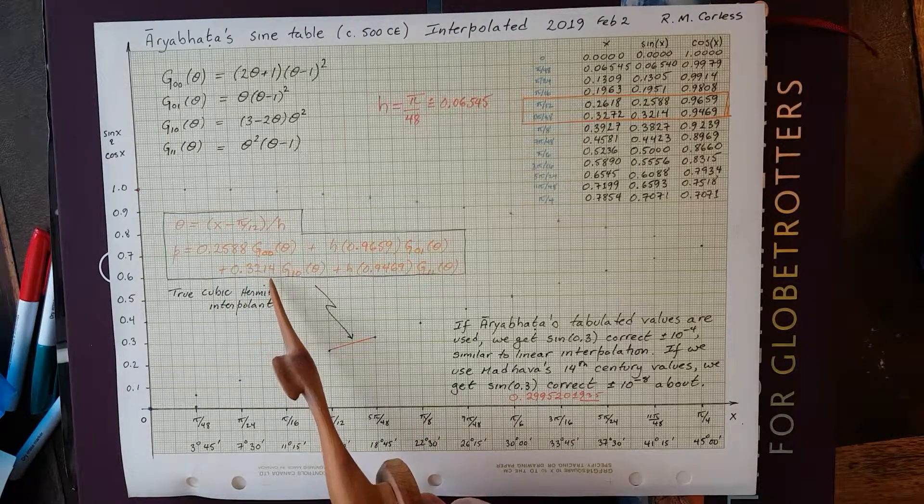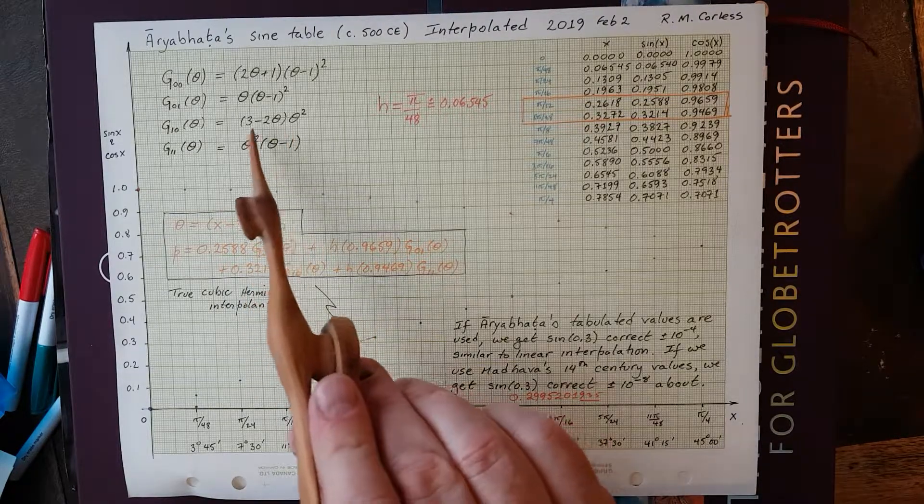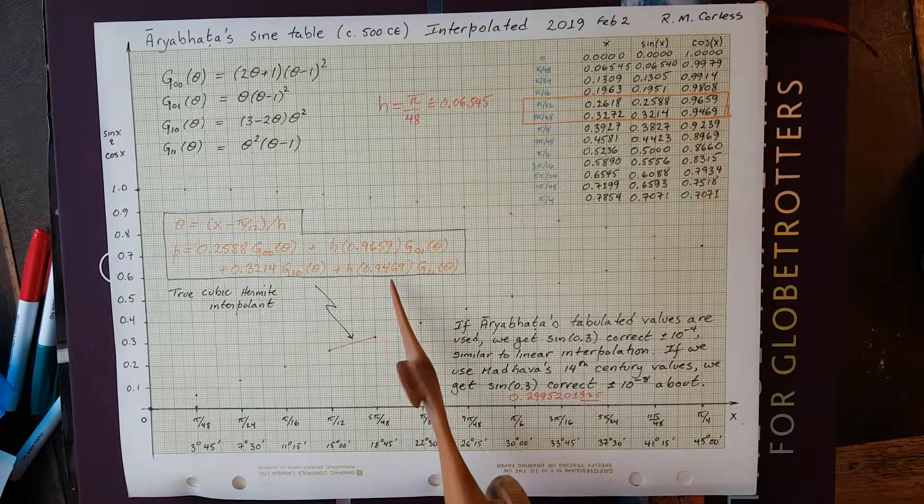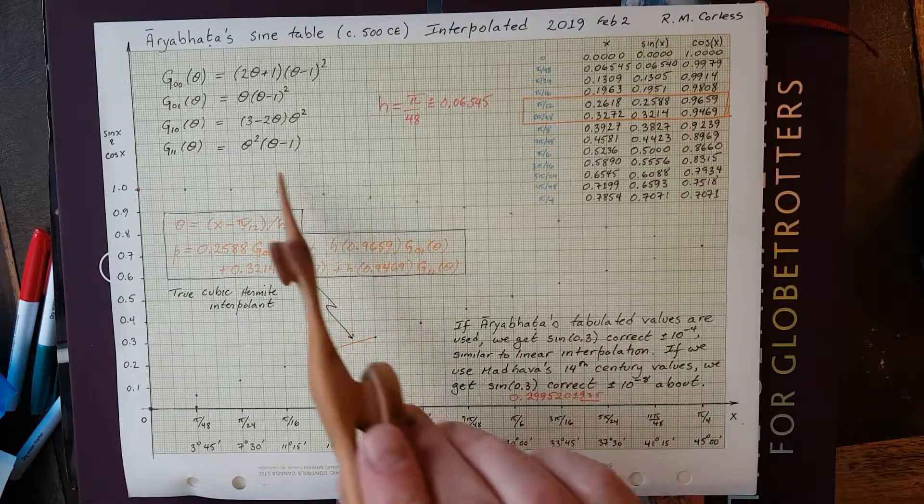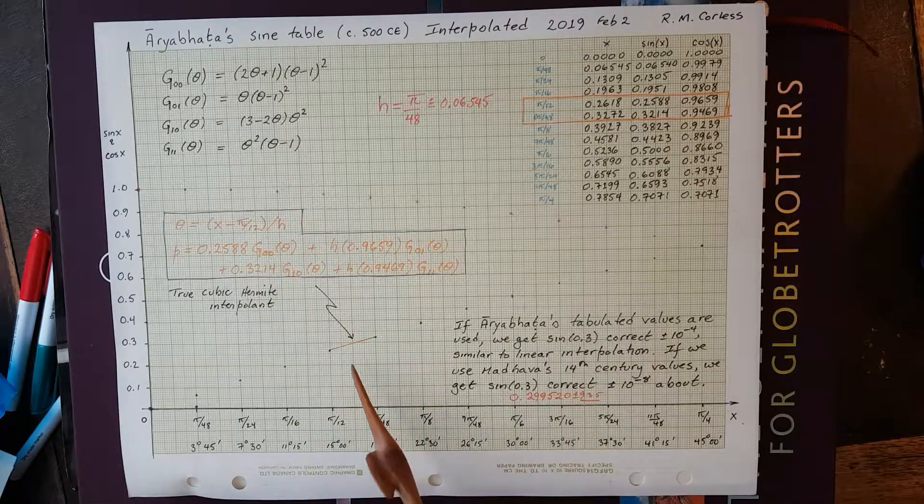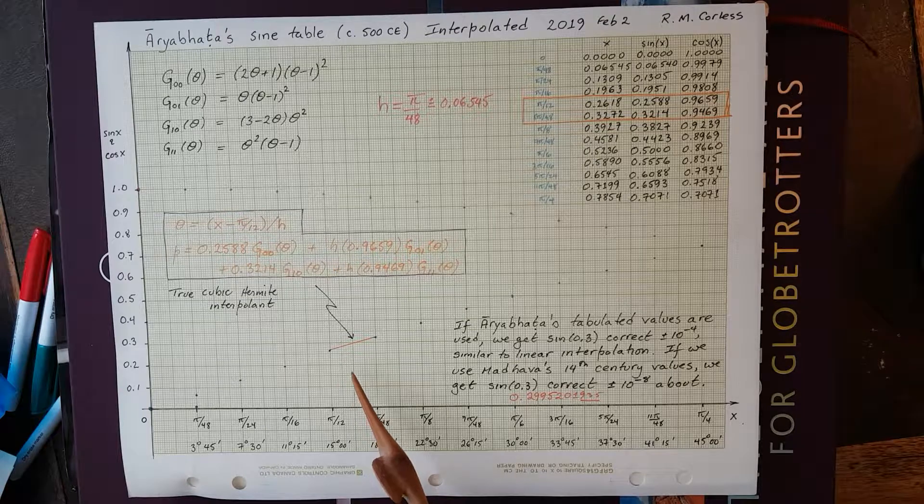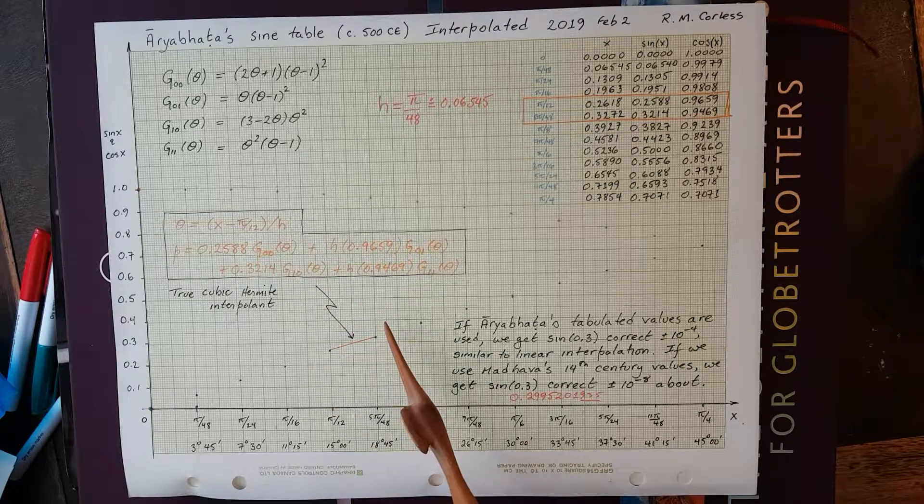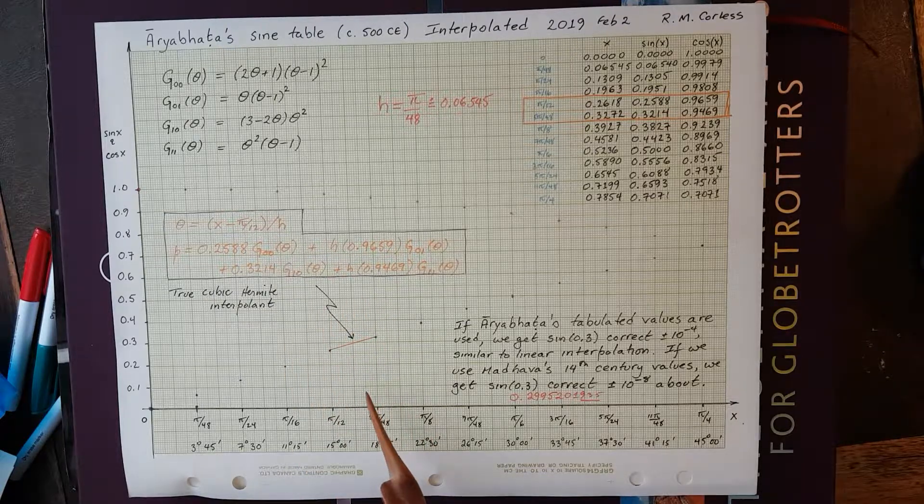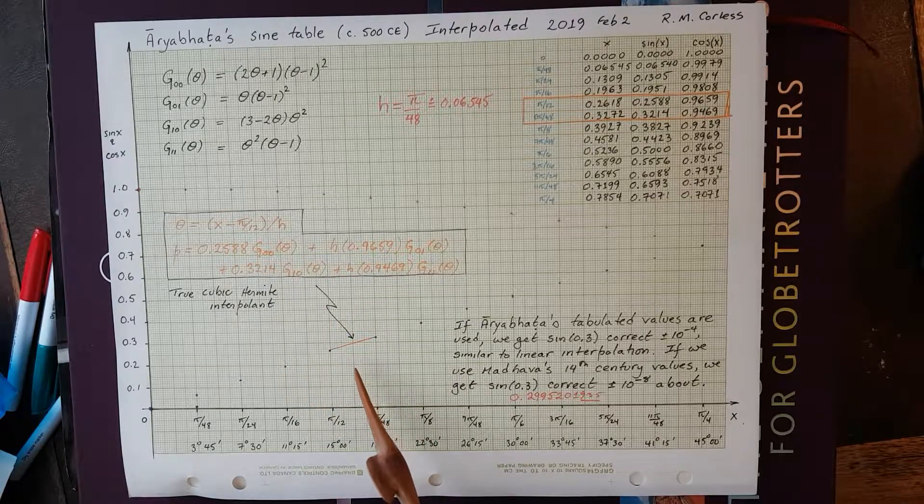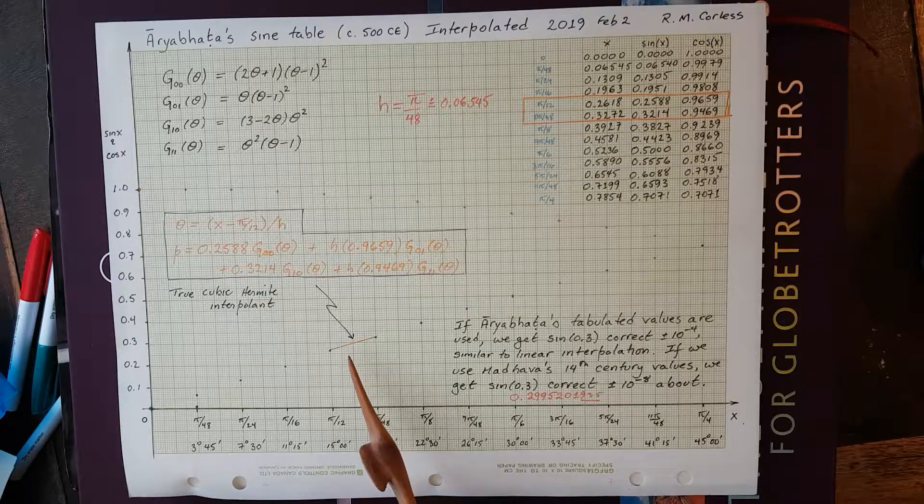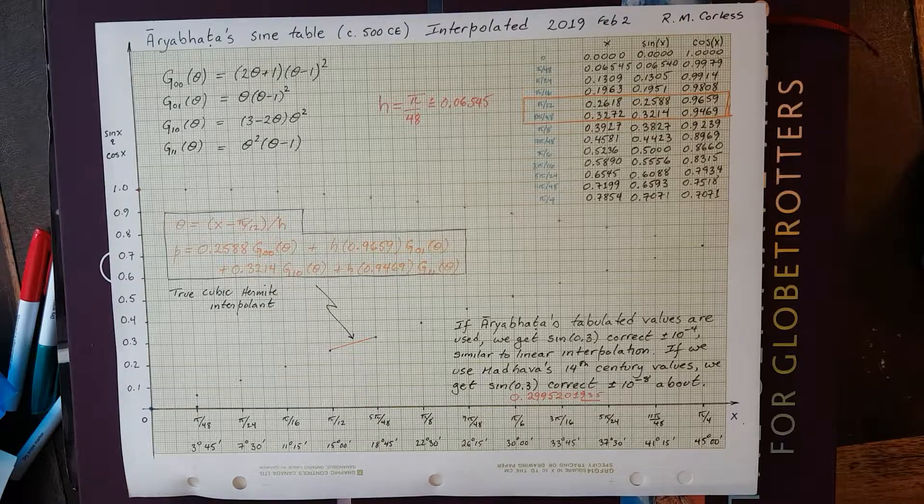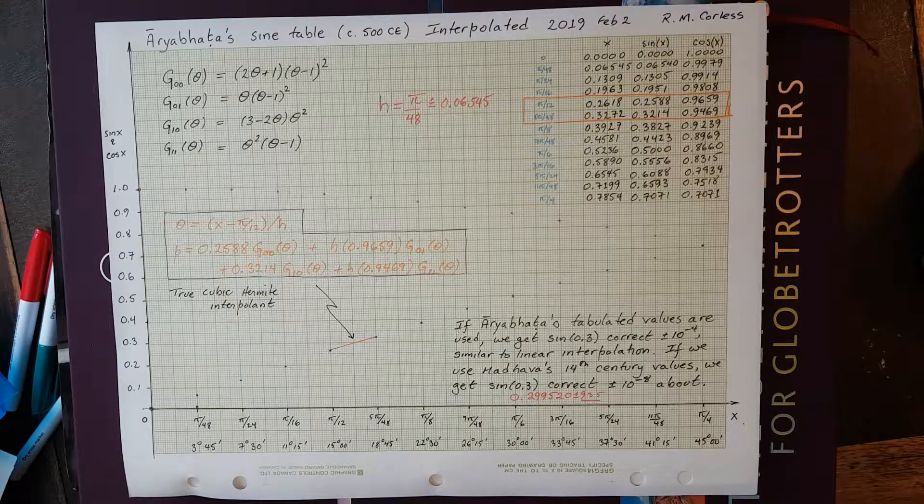Then we have 0.3140 times g1,0, which is (3 - 2θ)θ², so that's this value, plus h times 0.9469 times this value. And I wrote small programs for my little calculator, and plugged in the numbers, and you wind up getting four digits correct for the sine of 0.3 radians. It's 0.2994 is what you get.